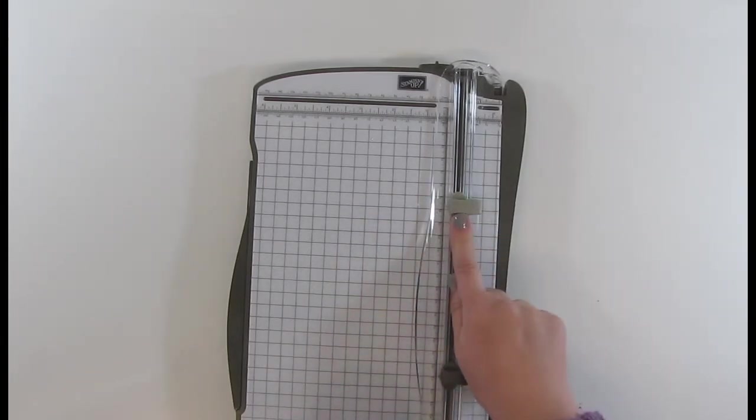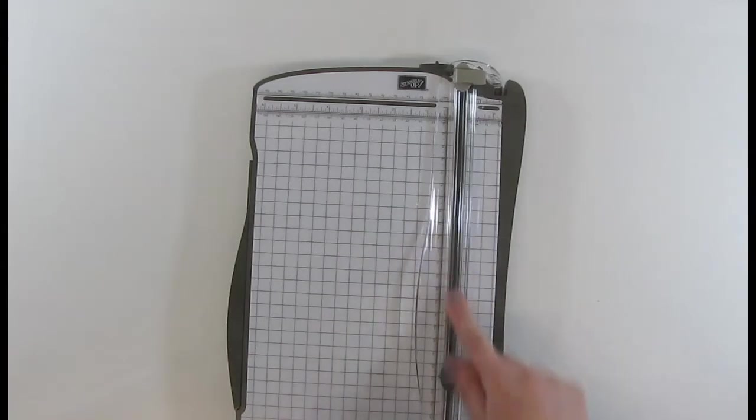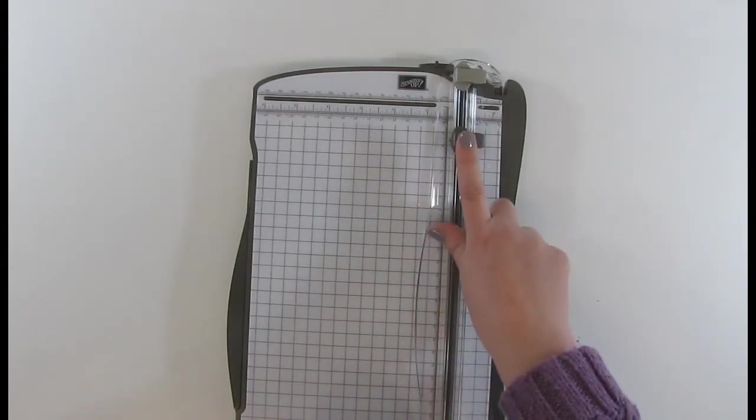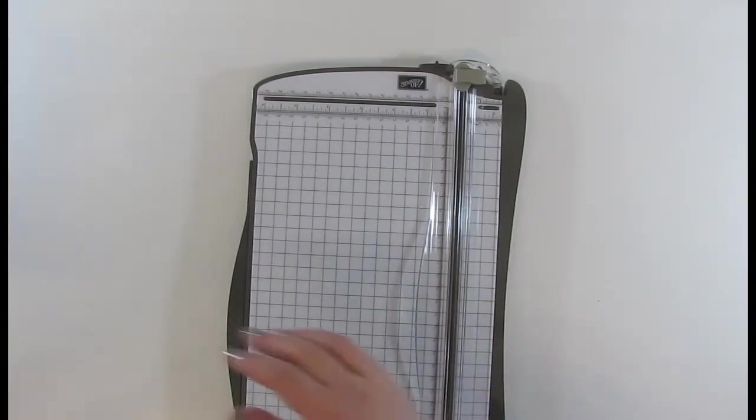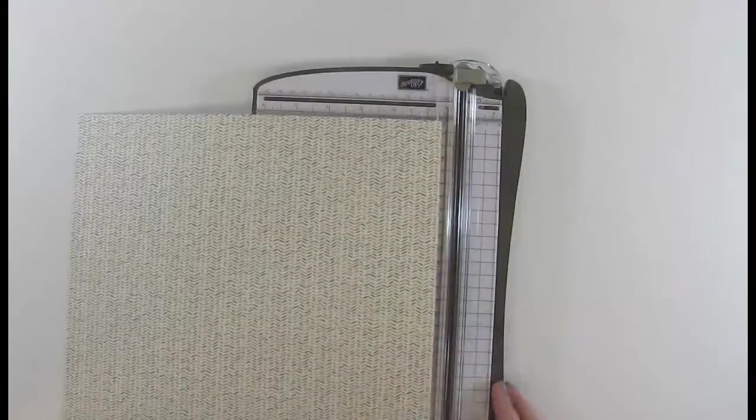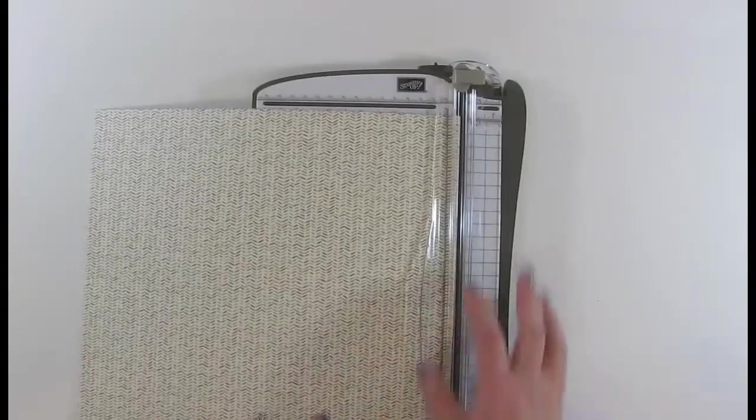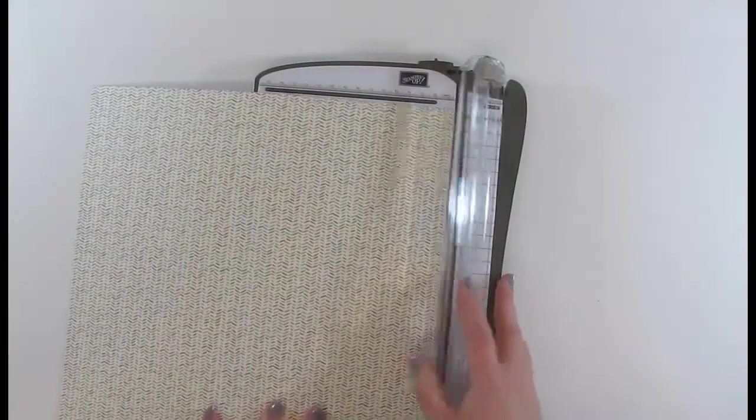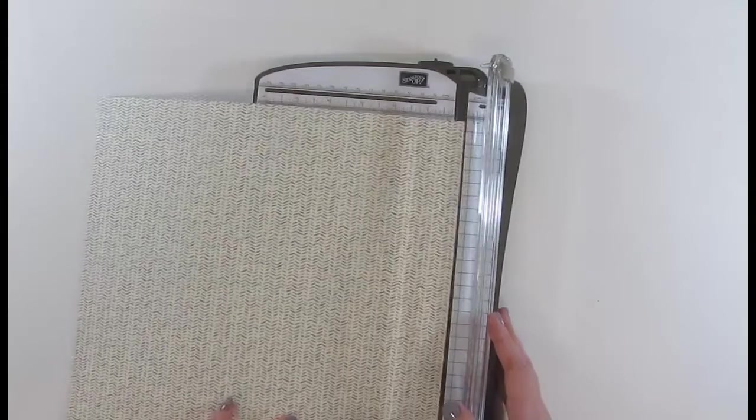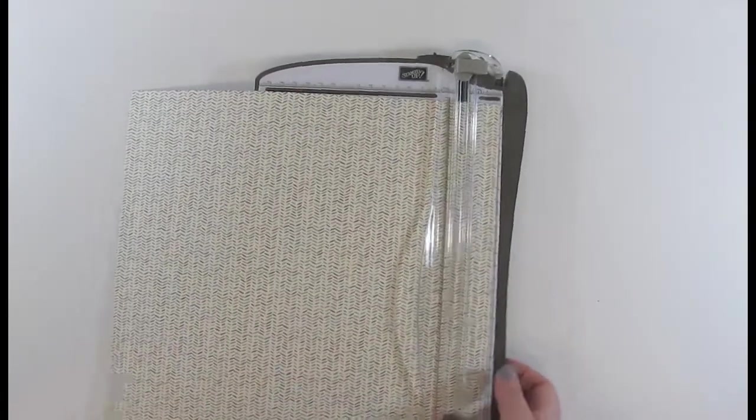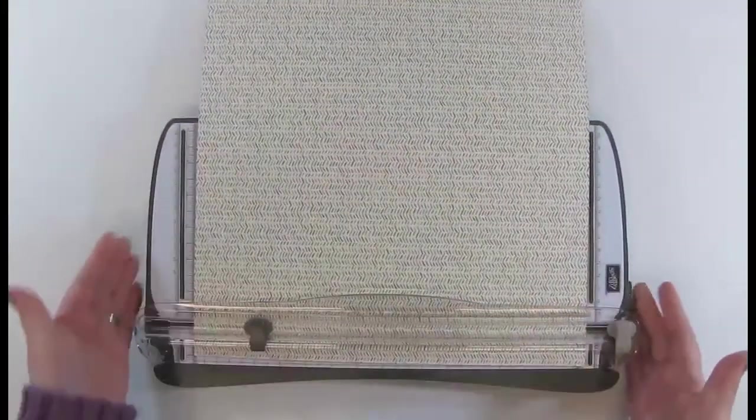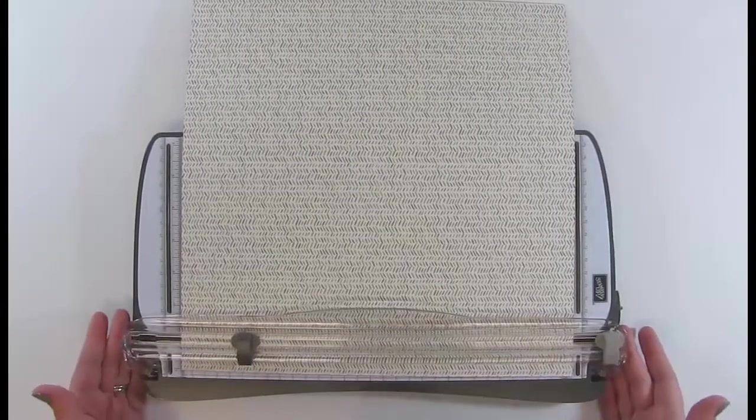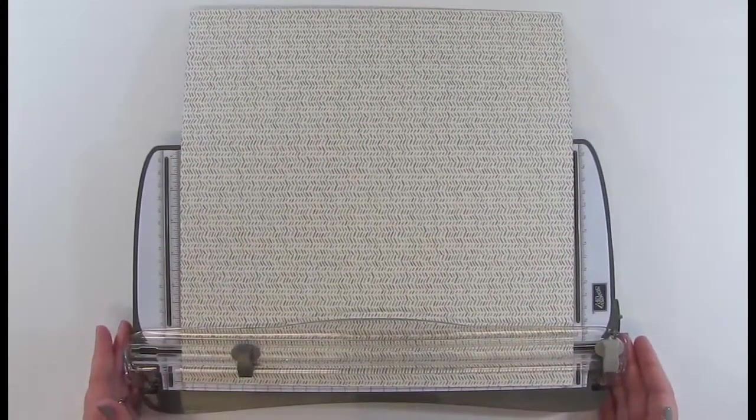So as I said we have the light grey which is the scorer and then the dark which is the cutter. Now I've got a piece of 12 by 12 paper just to show you the size. So you can see the size of it there. I'm just going to turn my trimmer because you can't really see the full size in the camera. So that's my 12 by 12 piece of paper.